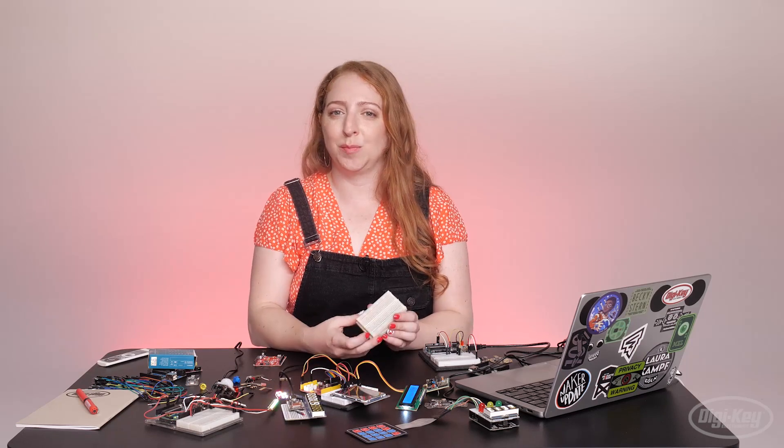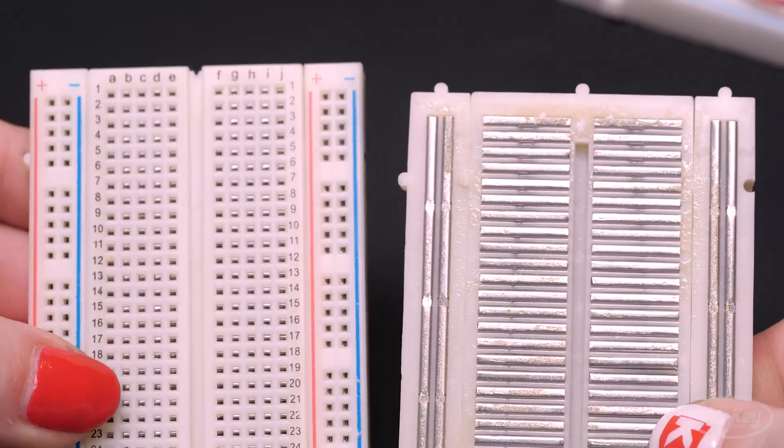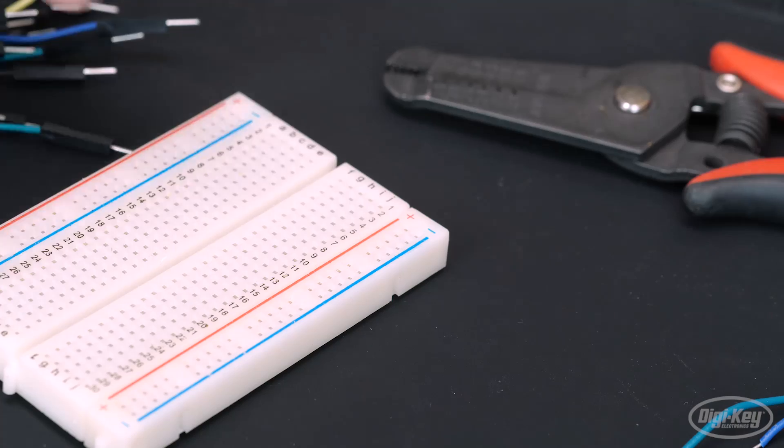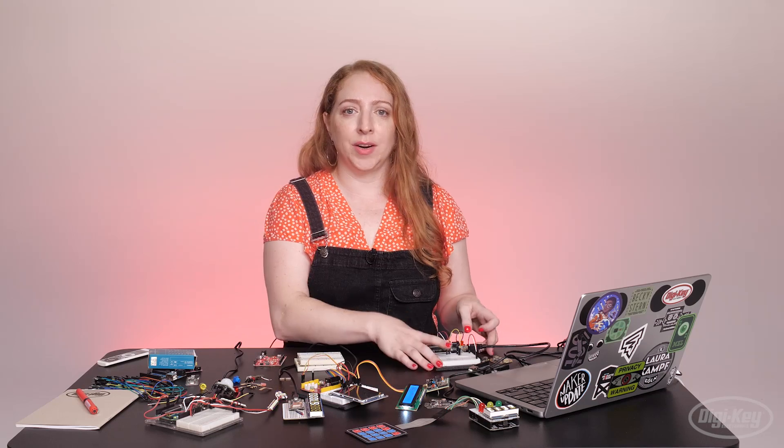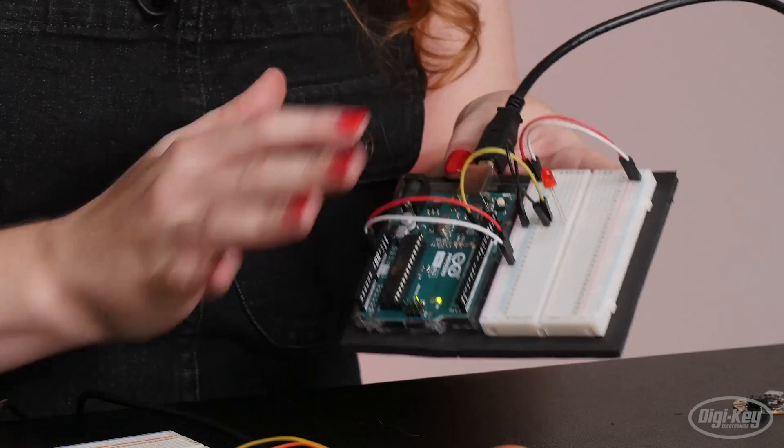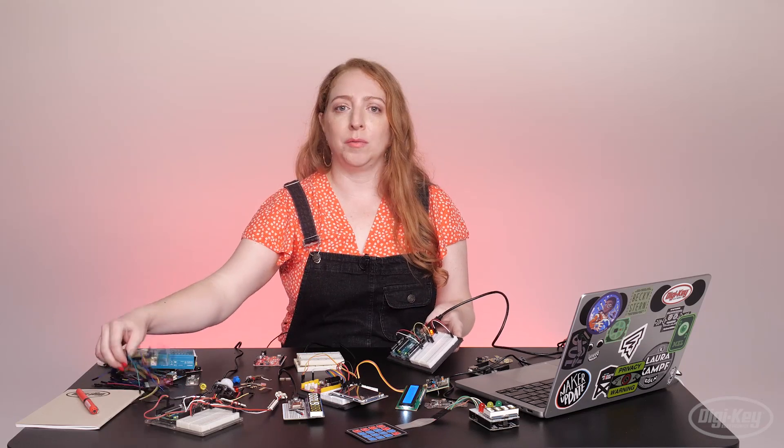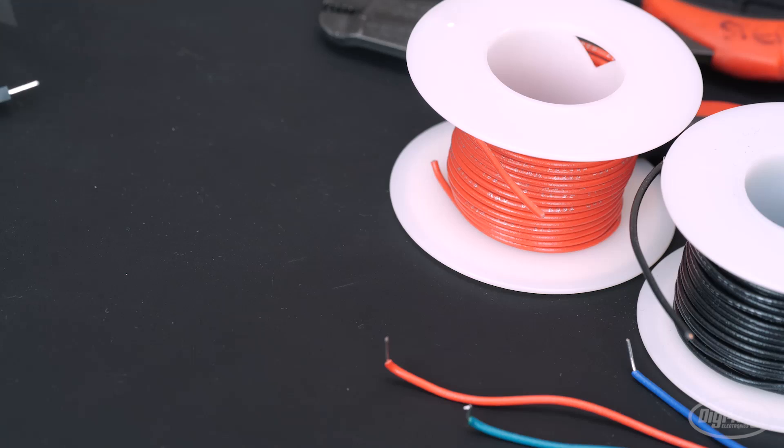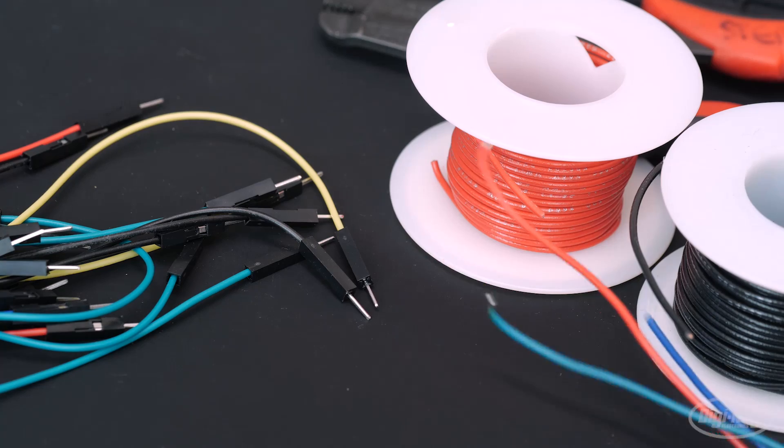You'll also need a solderless breadboard. This device has metal strips inside and many holes that allow you to connect components quickly and easily. I like to connect the breadboard and the Arduino board with a mounting plate so that my circuits stay together better. You'll use some wires to connect to the Arduino, either some purpose-built breadboard wires or solid core hookup wire works fine too.